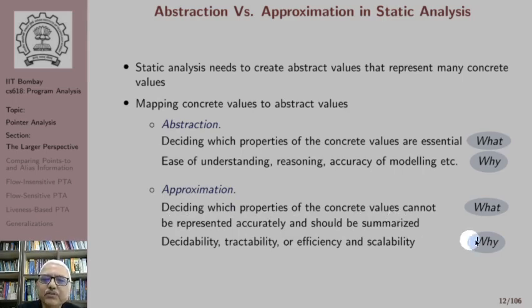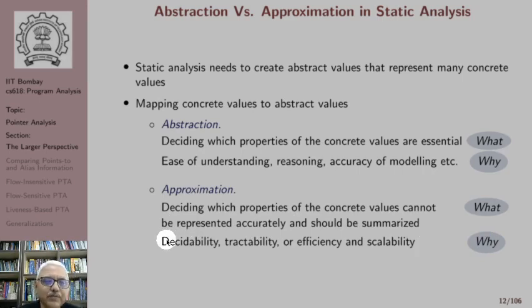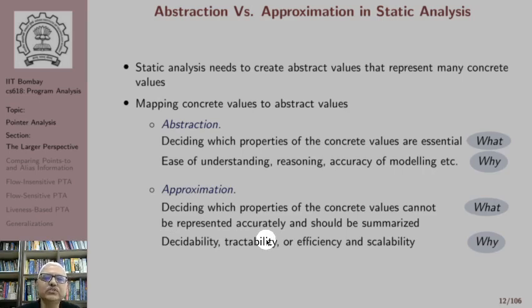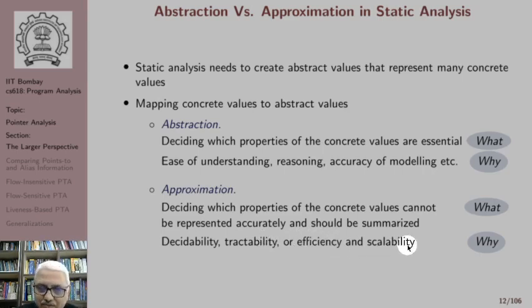Why do people use approximation? People use approximation for decidability — in order to convert an undecidable problem into a decidable problem, or in order to address the tractability issue. The problem may be NP-hard or NP-complete and we still want a polynomial time algorithm. So we are unable to accurately represent all properties and will summarize certain properties. Or we may also want to do it for efficiency and scalability.